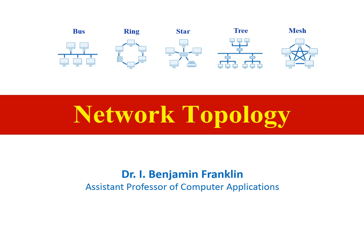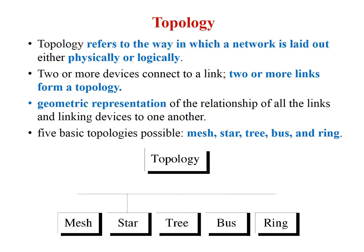Network topology means the way how the devices are connected to a network — the way in which the network is laid out. It may be either a physical connection or a logical connection. A network is based on two things: the device and the link. A link is used to connect two or more devices, and two or more links form a topology. It is a geometric representation of relationships between the links and the linking devices.